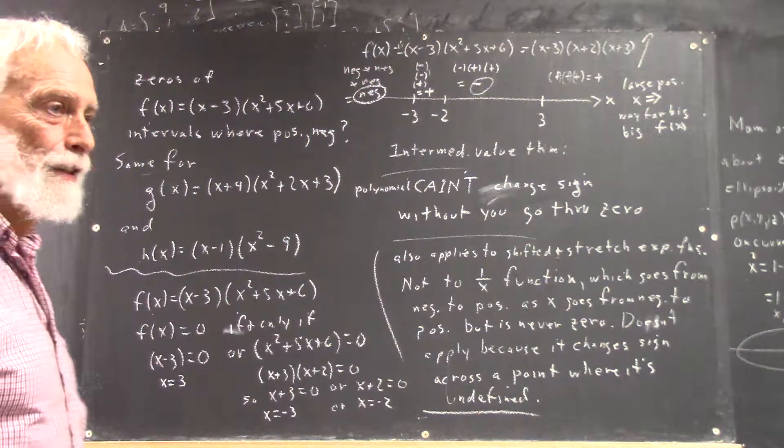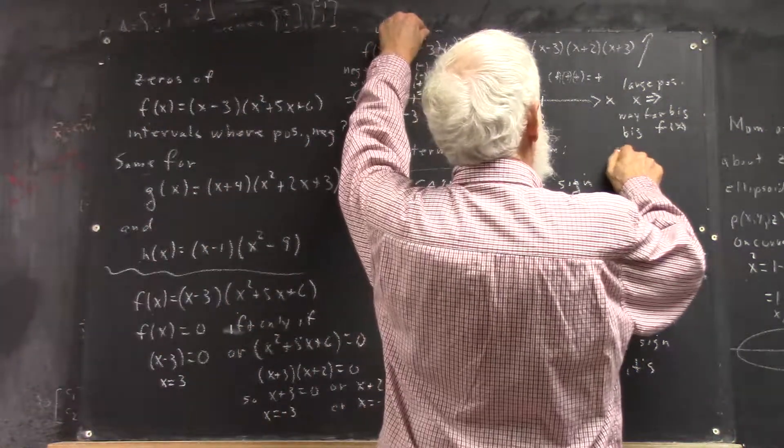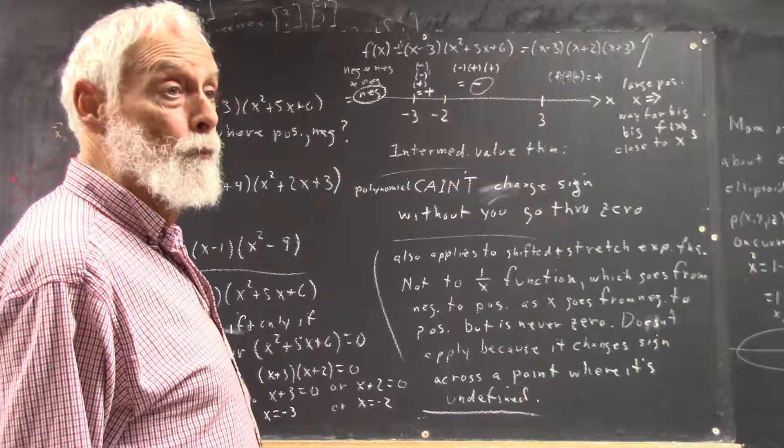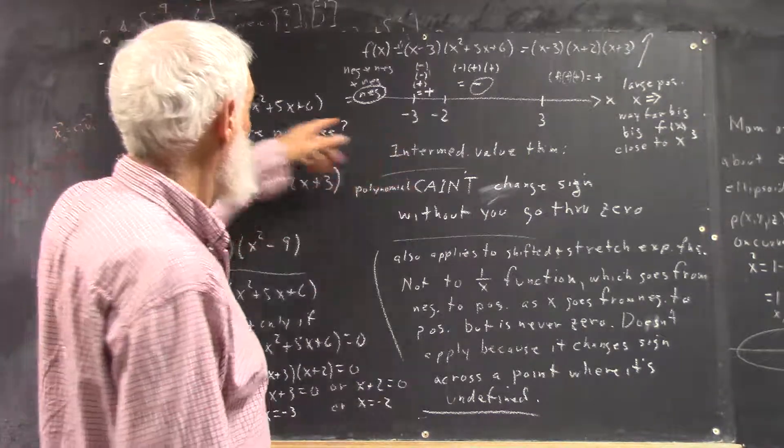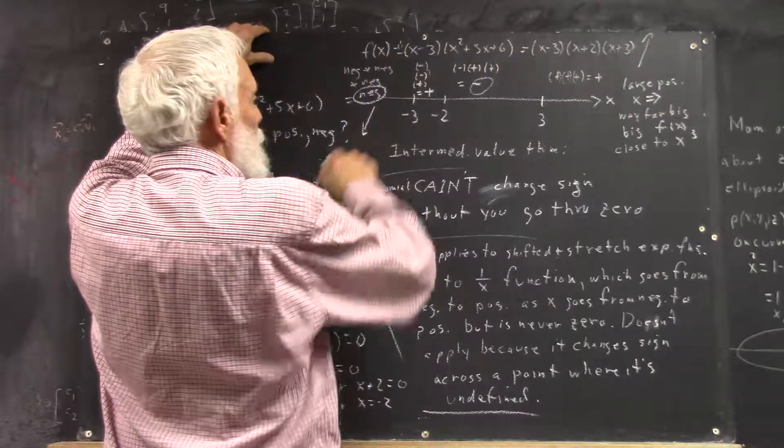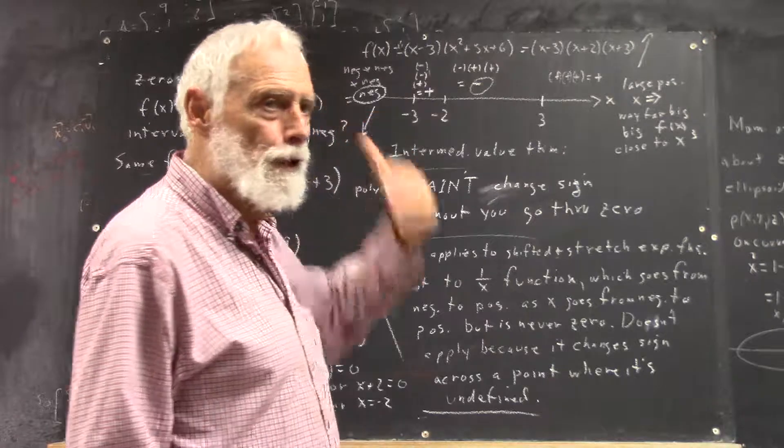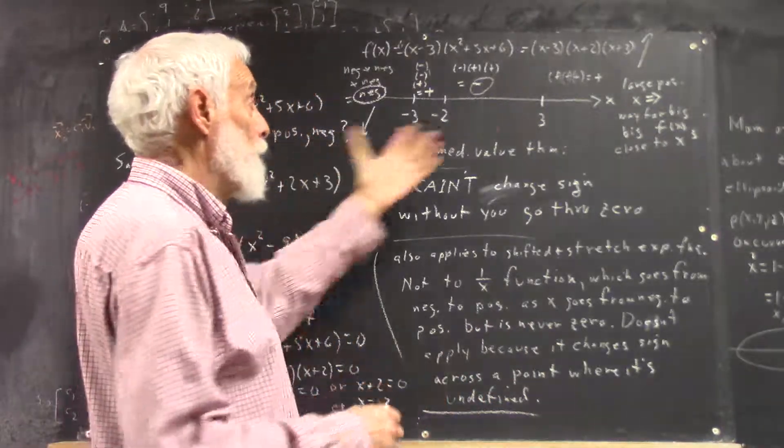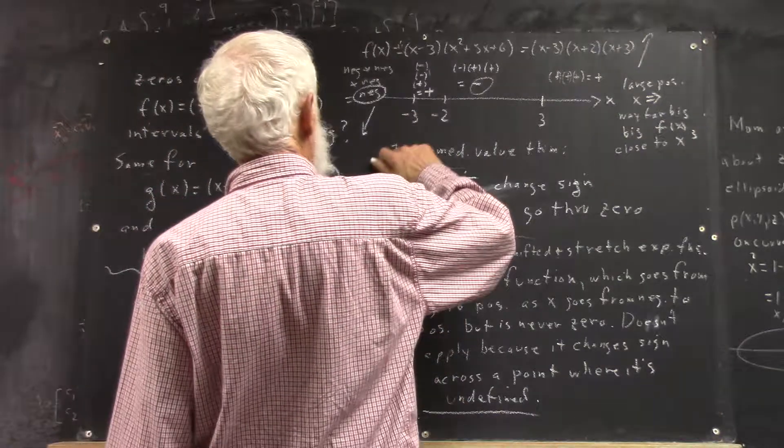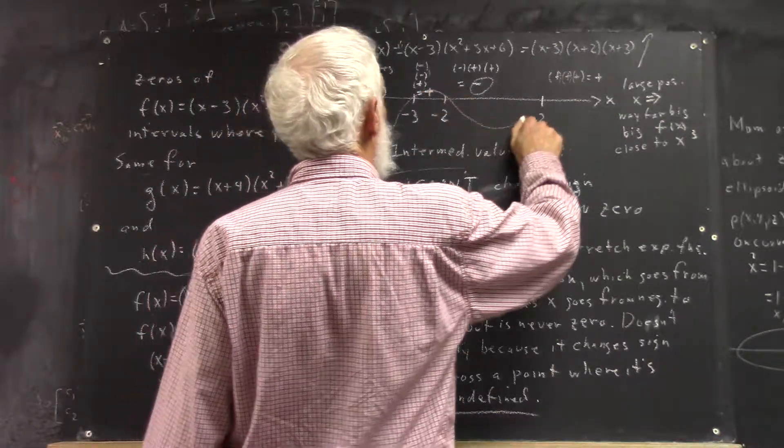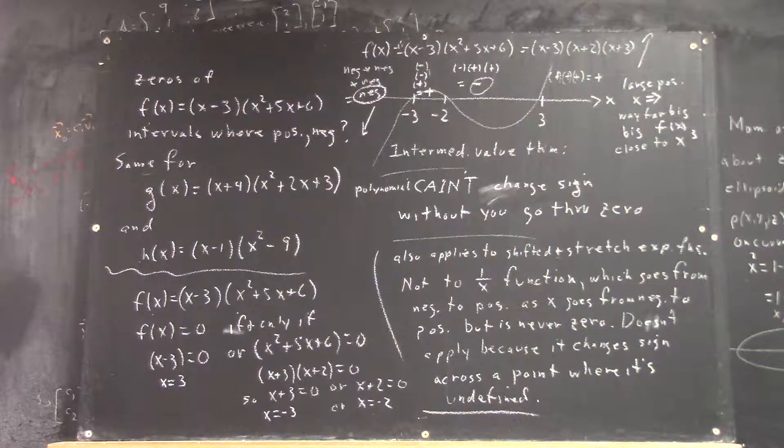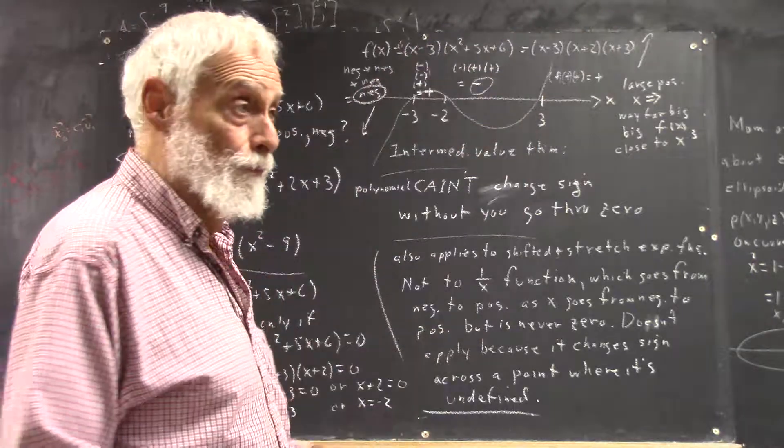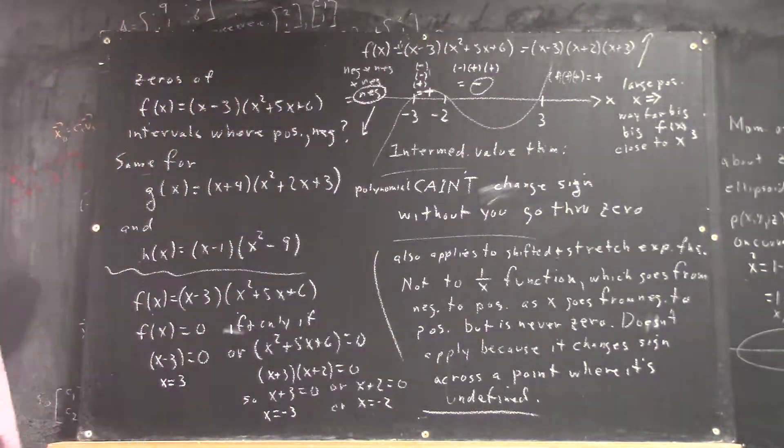And also, by what I showed you, that way far big, big f of x is close to x cubed. And then out here, you reason it out the same way. If x is a large negative, then you have a large negative times a large negative times a large negative, which is negative, but it's really big. So now we see something about what this graph has to look like. And what it looks like is something very much like this. Viewed from a long distance, these little wobbles kind of disappear, and it looks just like an x cubed graph. Now we saw that last time. So let's see what we do with these other two examples.